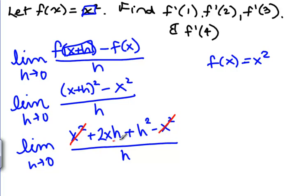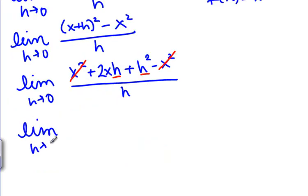And just like before we now have an h in every term so we can factor it out. So the limit as h goes to 0 of h times 2x plus h divided by h.